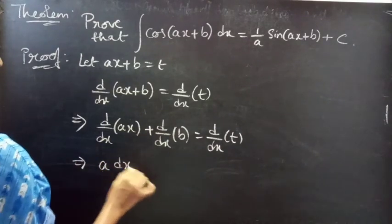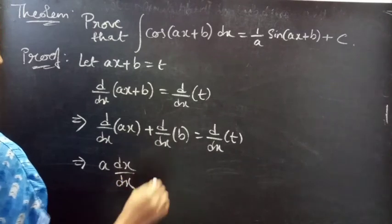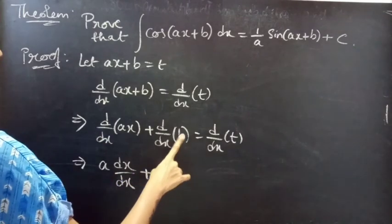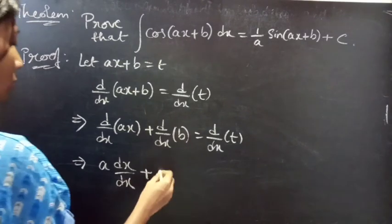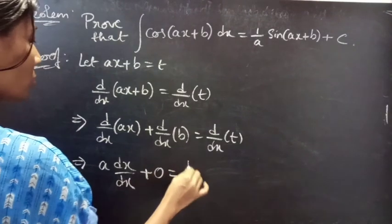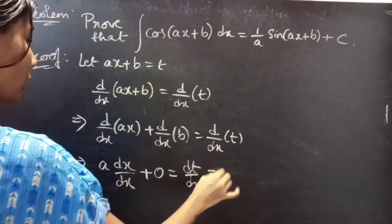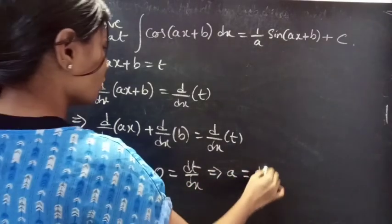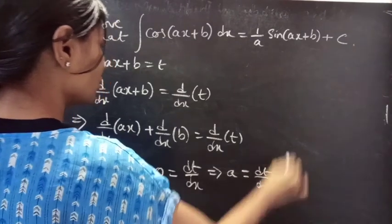you get a into dx by dx plus since b is constant, derivative of a constant is 0 equals to dt by dx. Then, a equals to dt by dx.